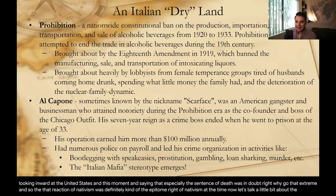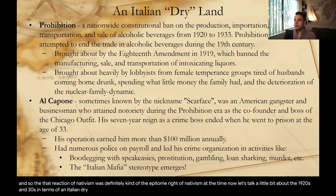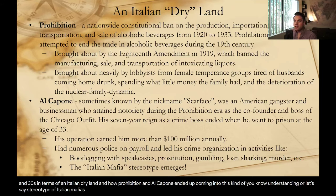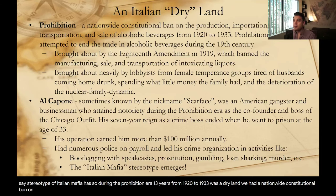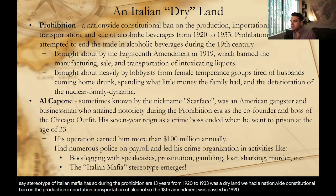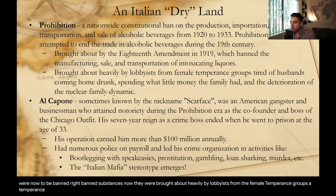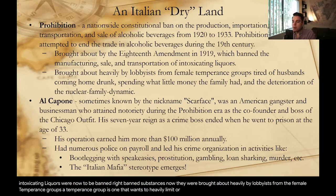Now let's talk about the 1920s and 30s and how prohibition and Al Capone fed into the Italian mafia stereotype. During the prohibition era, the United States was a dry land for 13 years, from 1920 to 1933 — a nationwide constitutional ban on the production, importation, and transportation of alcohol. The 18th Amendment was passed in 1919, banning all intoxicating liquors. These were brought about heavily by lobbyists from female temperance groups — groups that wanted to heavily limit or ban alcohol from society.